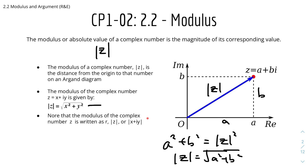Note that the modulus of the complex number z is written as r, which is the radius, or as the modulus of z, or as the modulus of x plus iy.